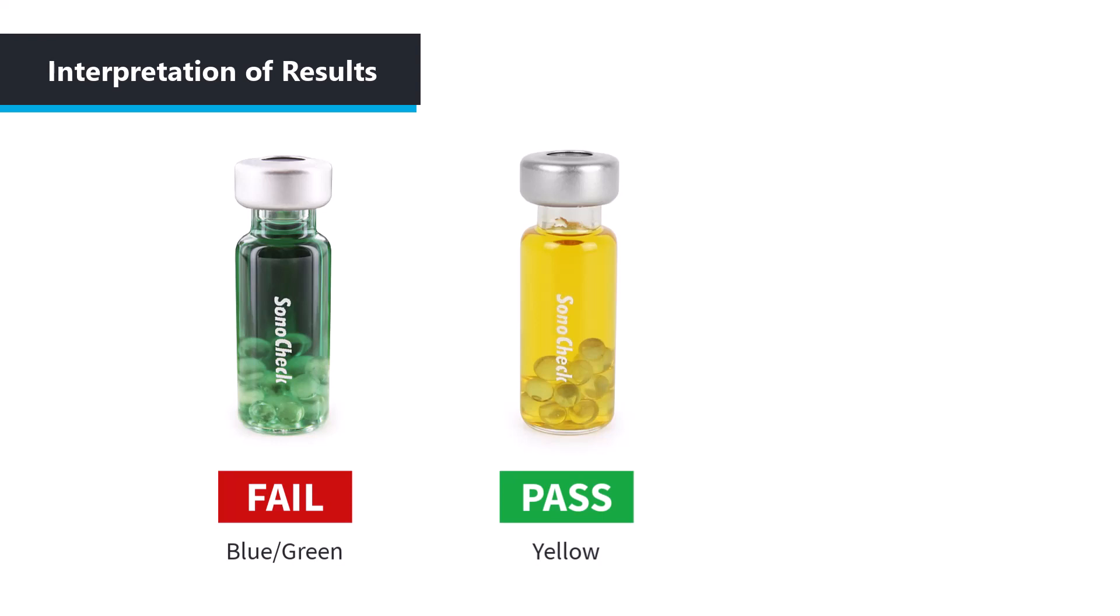Now, in rare circumstances, it is possible to get a SonoCheck that is completely clear. There's no yellow, no green, no blue, any of that. That is considered a passing result. It does happen on occasion when your ultrasonic cleaner has really powerful cavitation, but it is worth mentioning that you could have a clear vial, and it is in the IFU as well.